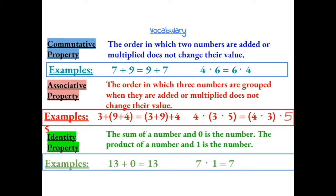The last property is the identity property, which states that the sum of a number and 0 is always the same number, and the product of a number and 1 is always the same number. For example, 13 plus 0 is 13 and 7 times 1 is 7. These rules do apply to subtraction and division, because any number minus 0 is itself and any number divided by 1 is the same number.